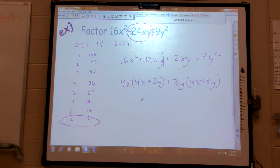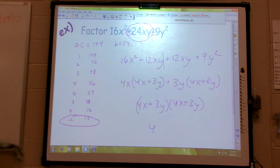Oh, nice problem. 4x plus 3y, 4x plus 3y, which I'm going to write as 4x plus 3y quantity squared. Simplify it all you can. Beautiful.